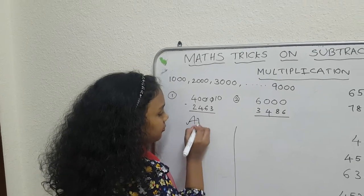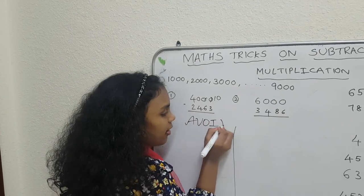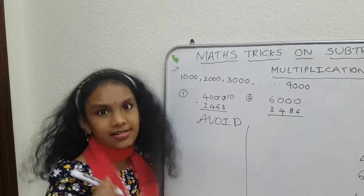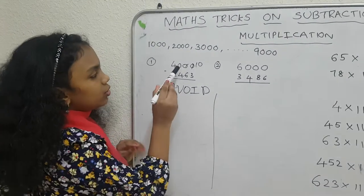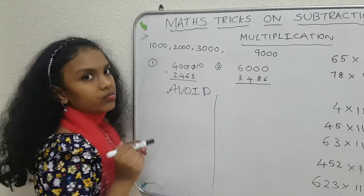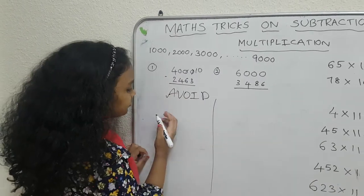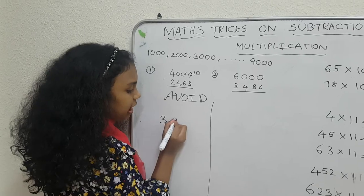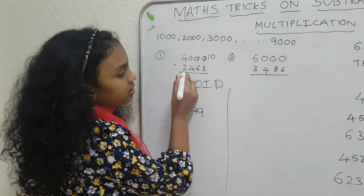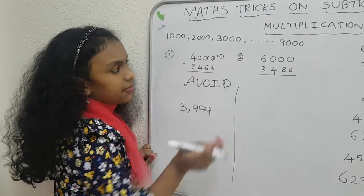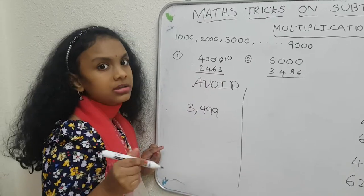Avoid. Avoid this trick. We have an easy simplifier for you. Now we need to do the before number of 1000. What is it? 3999, right? Now, 2463's before number, 2462.